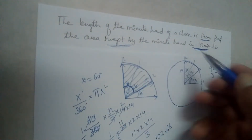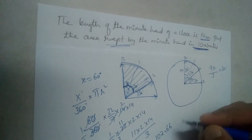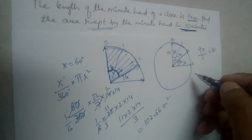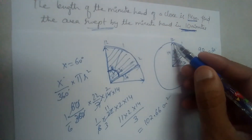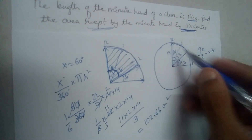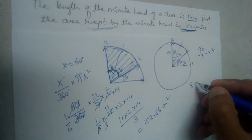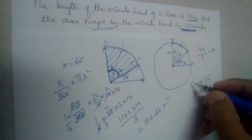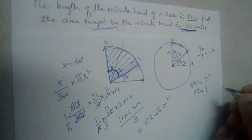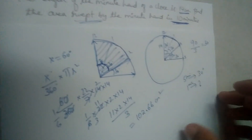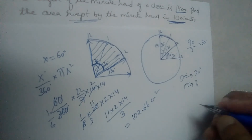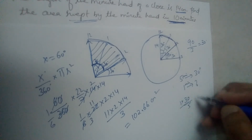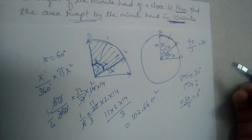The area swept by the minute hand in 10 minutes is 102.66 centimeters square. One important thing to learn from this problem: if the minute hand moves for 5 minutes it makes 30 degrees. So for 1 minute it makes 30 divided by 5, which equals 6 degrees.